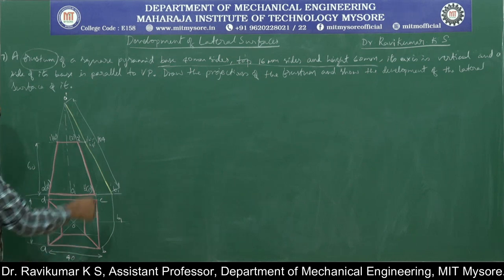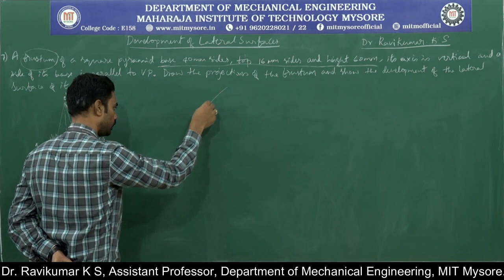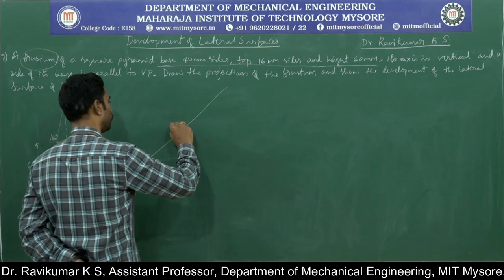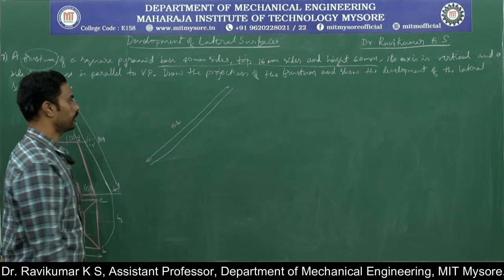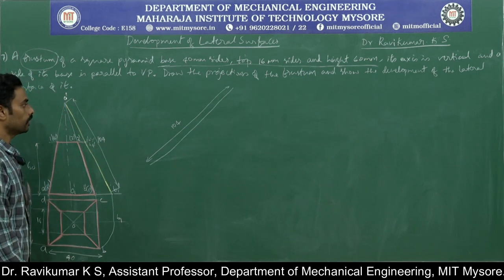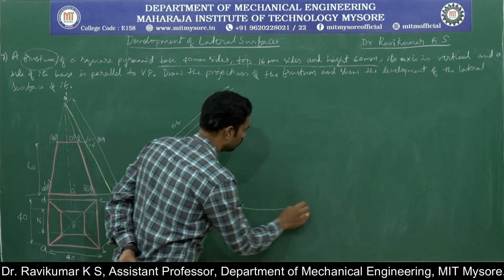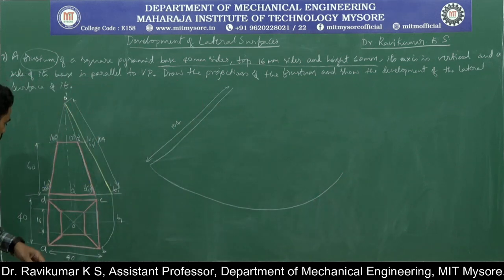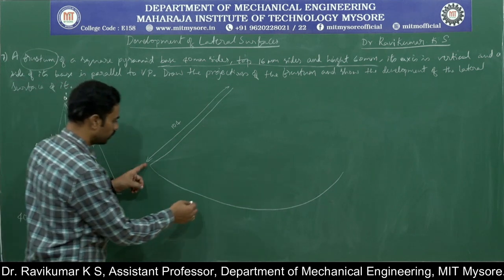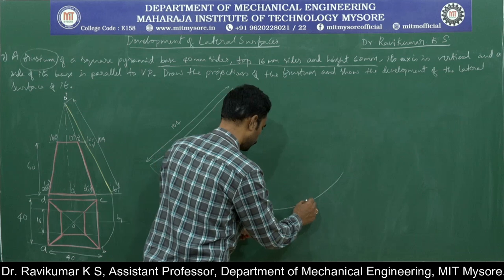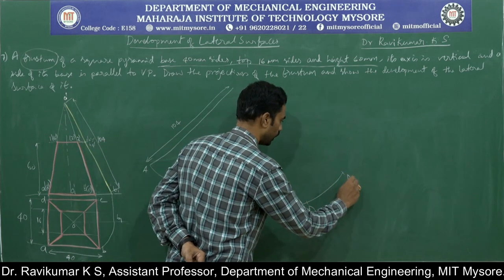To draw the development: the true length is 104mm. Select any point, draw a line of 104mm. Take that point as center, 104mm as radius, and draw an arc. Since it is a square pyramid, measure 40mm along the arc to cut distances A1, A2, A3, A4, giving points A, B, C, D, and A again. Join them with thin lines initially.